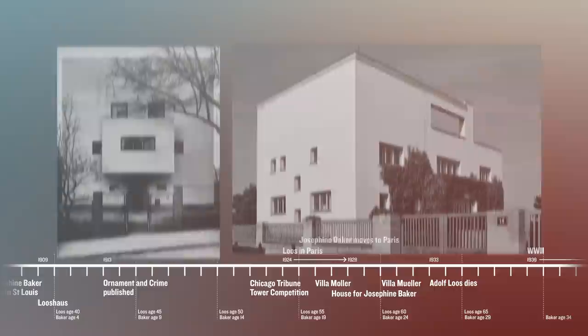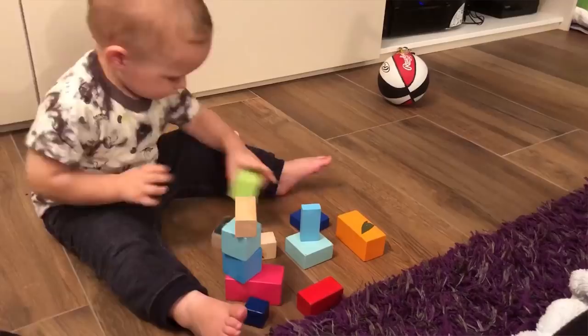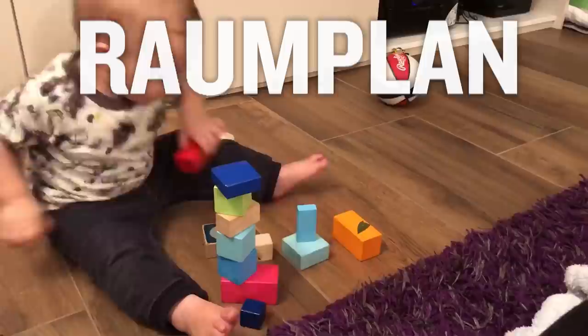In 1924 Loos moved to Paris and while this was a slow period for his architectural production, it's when he designed some of his most influential houses like the Moeller House and the Mueller House — which sound alike but are different. These houses exhibit Loos's strategy of arranging rooms of varying sizes and heights as blocks stacked into an intricate arrangement that he would call the Raumplan.